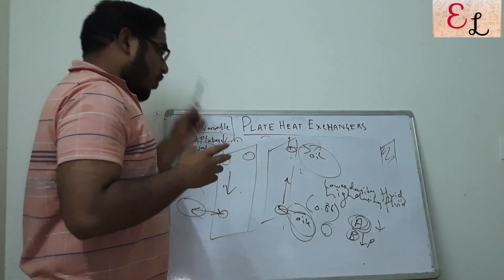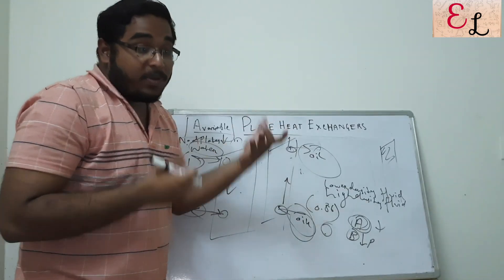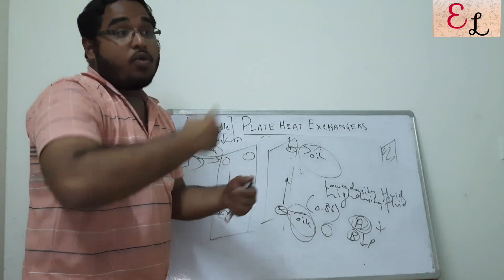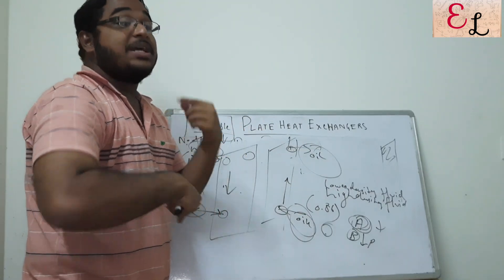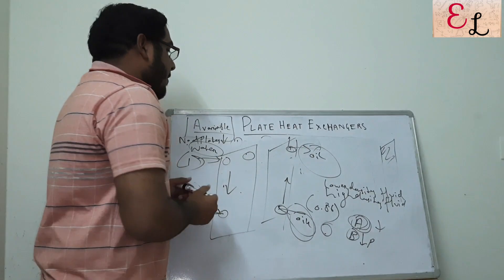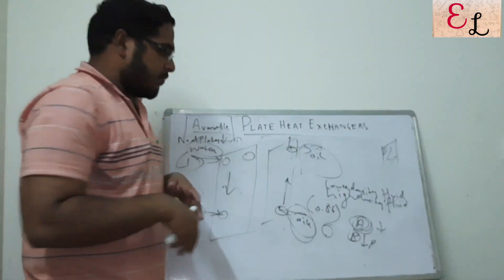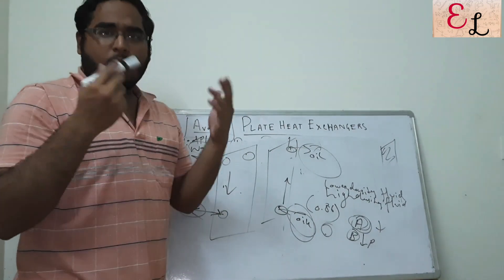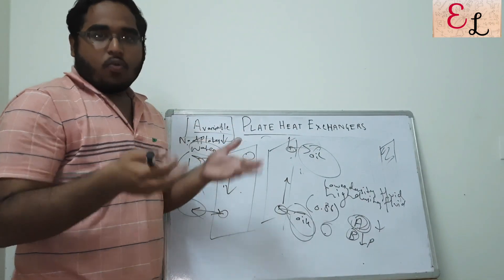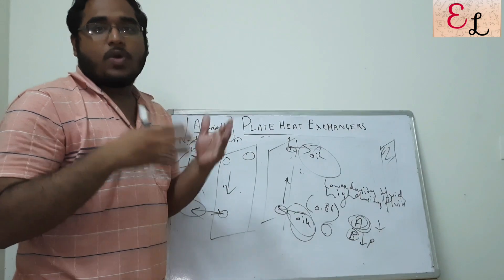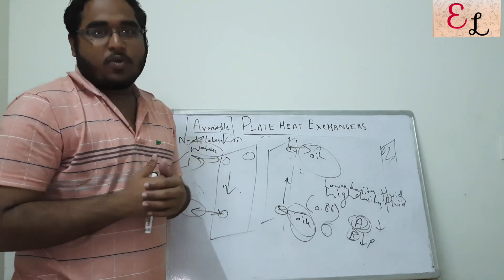This is how a plate heat exchanger works: hot fluid, cold fluid, hot fluid, cold fluid — in alternative plates — ensured by providing elevated gaskets to prevent flow of hot fluid in some plates and cold fluid in others. Plate heat exchangers have almost been summed up: the working principle, the practical industrial example of low-density and high-density fluid selection, and why plate heat exchangers are preferred over other heat exchangers. We will bring more technical videos on other equipment in upcoming videos. If you liked our content, like it, share it with your friends, and subscribe to our channel. Thank you very much.